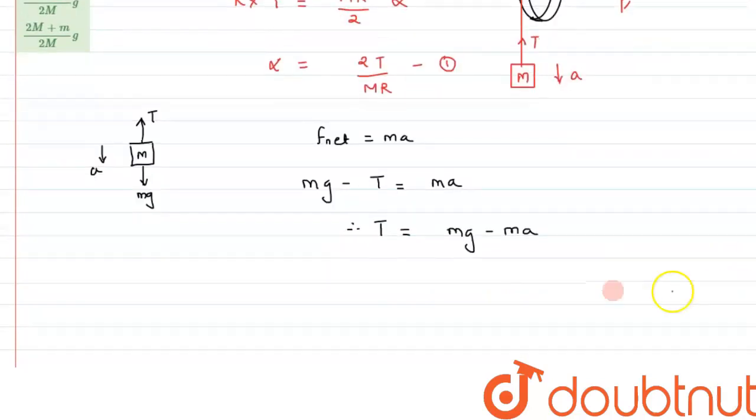Let's say this is equation 2. From equation 1, if we substitute, alpha can be written as a/R, which equals 2T/MR, where T = mg - ma.